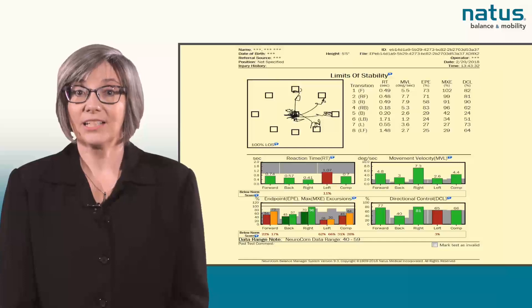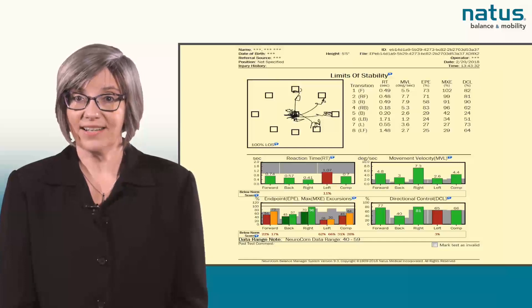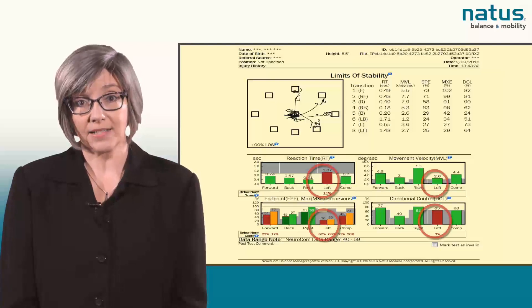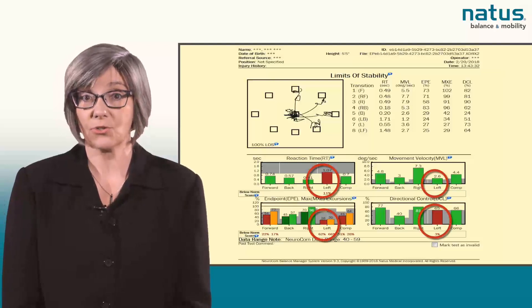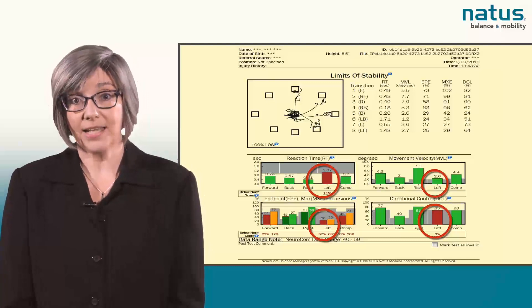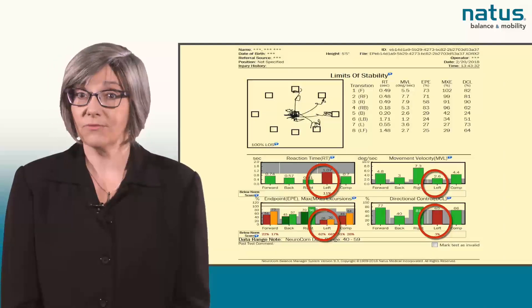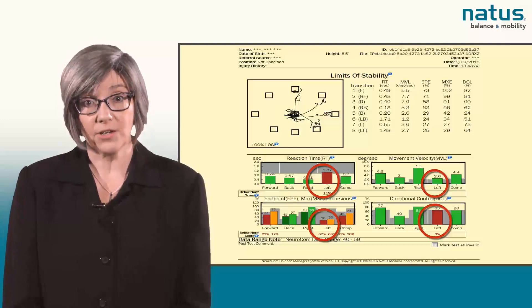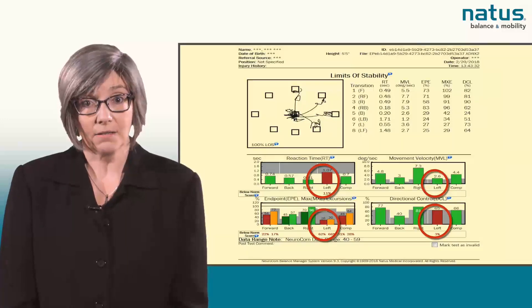The test results clearly show reduced movement in the leftward direction, as reflected by abnormal maximum and endpoint excursion scores. The prolonged reaction time and decreased velocities could reflect her reluctance to move quickly, perhaps due to fear, pain, or both.